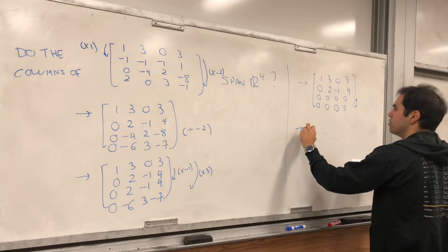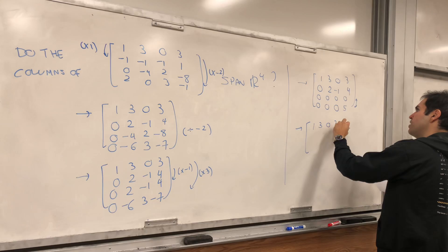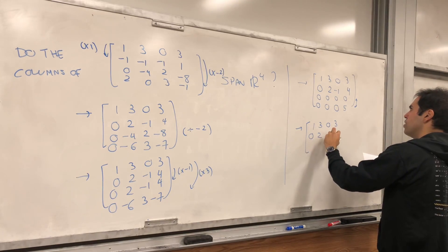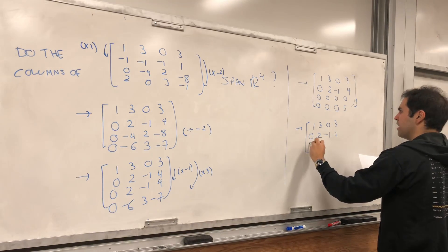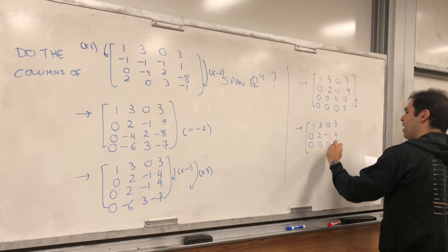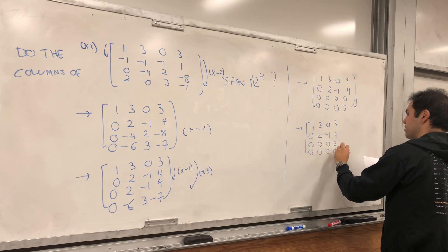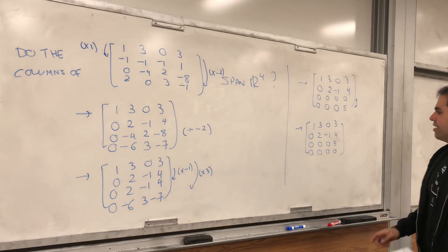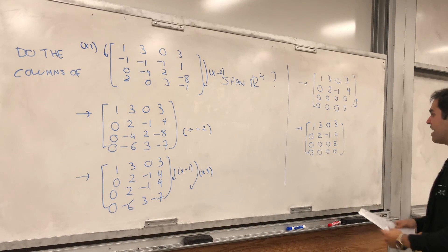And then lastly, to really technically make it row echelon form, you swap those two rows, and you get one, three, zero, three, and then zero, two, minus one, four, and then zero, zero, zero, five, and zero, zero, zero, zero, so this is in row echelon form.